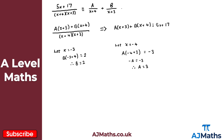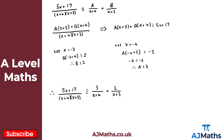We've found A = 3 and B = 2, so we can now write the partial fractions. Using the identity symbol, (5x + 17) / ((x+4)(x+3)) is identical to 3/(x+4) + 2/(x+3). That's how we split a single fraction into partial fractions when we have two distinct linear factors.